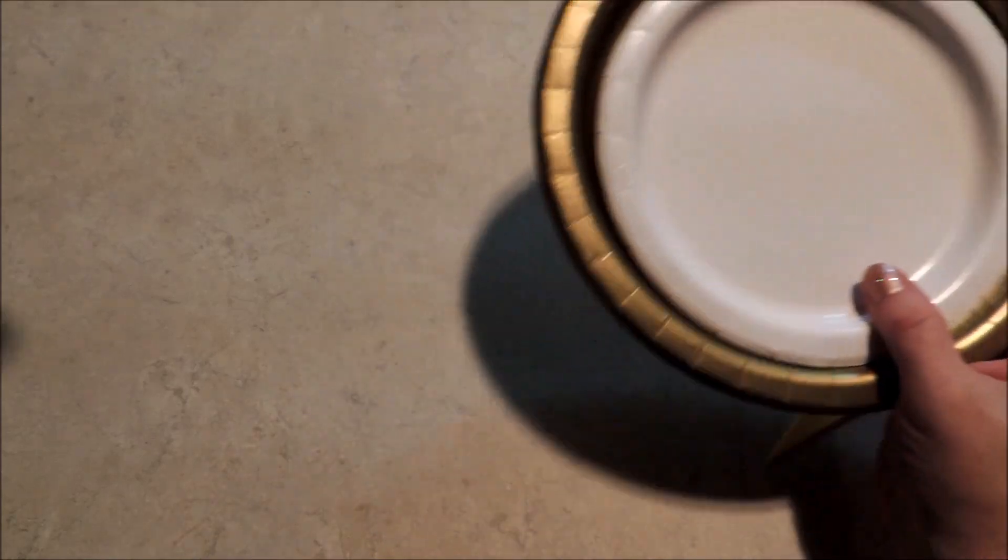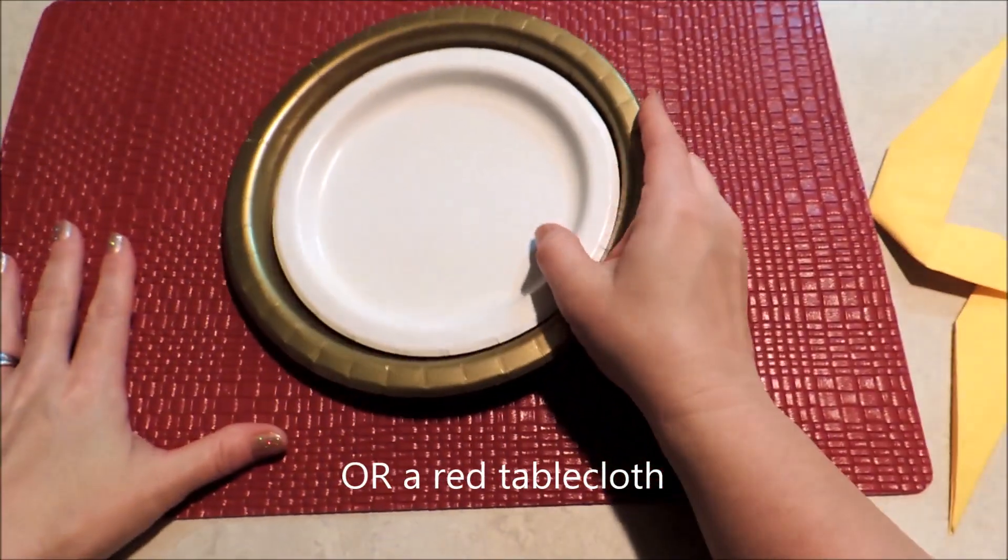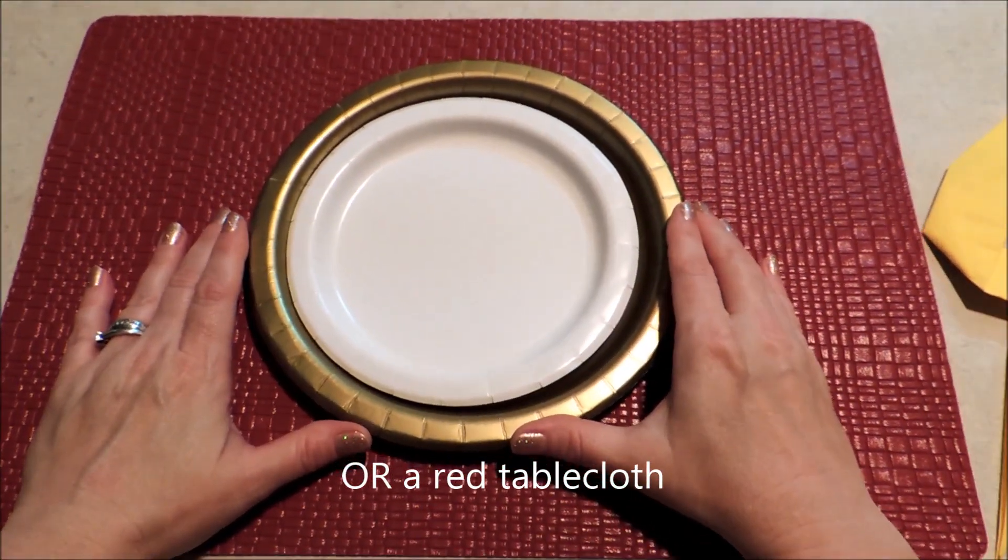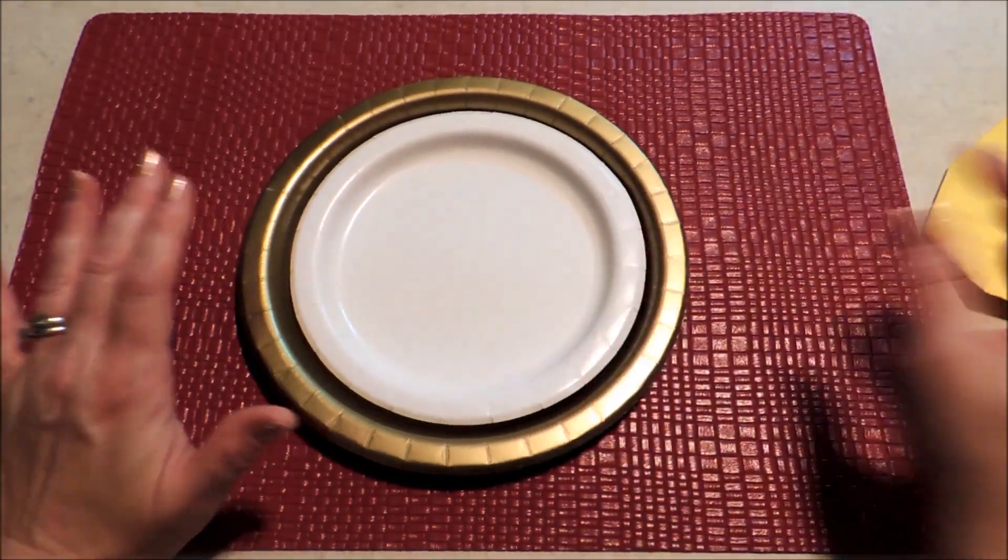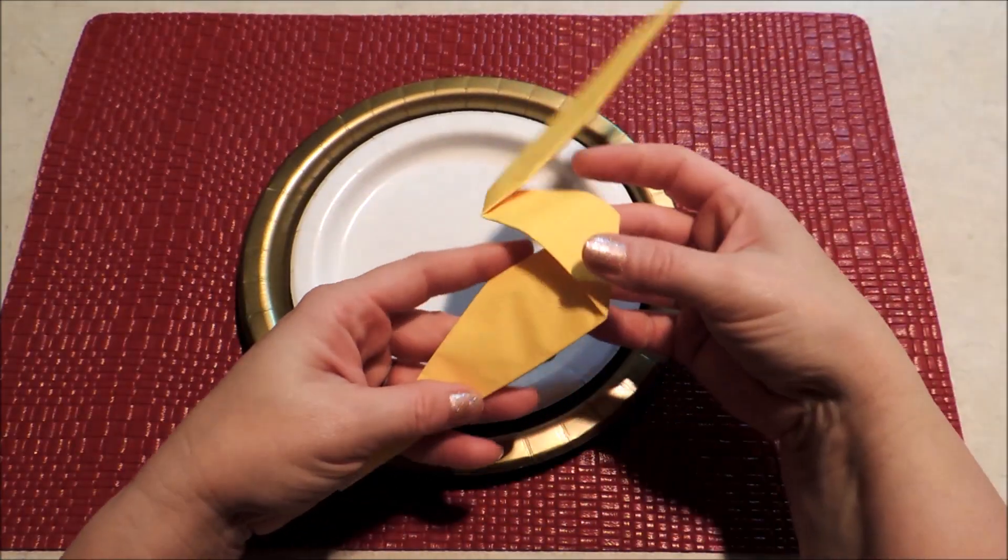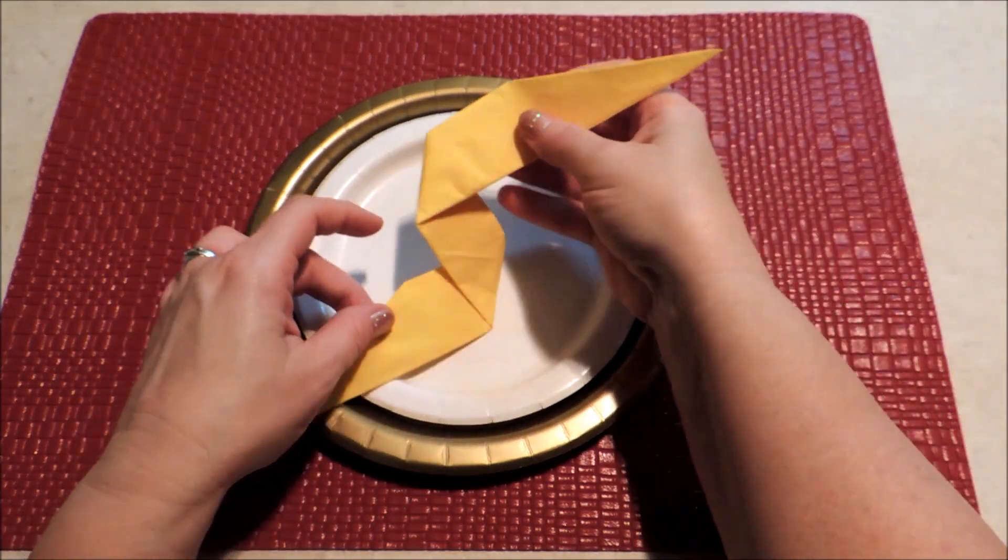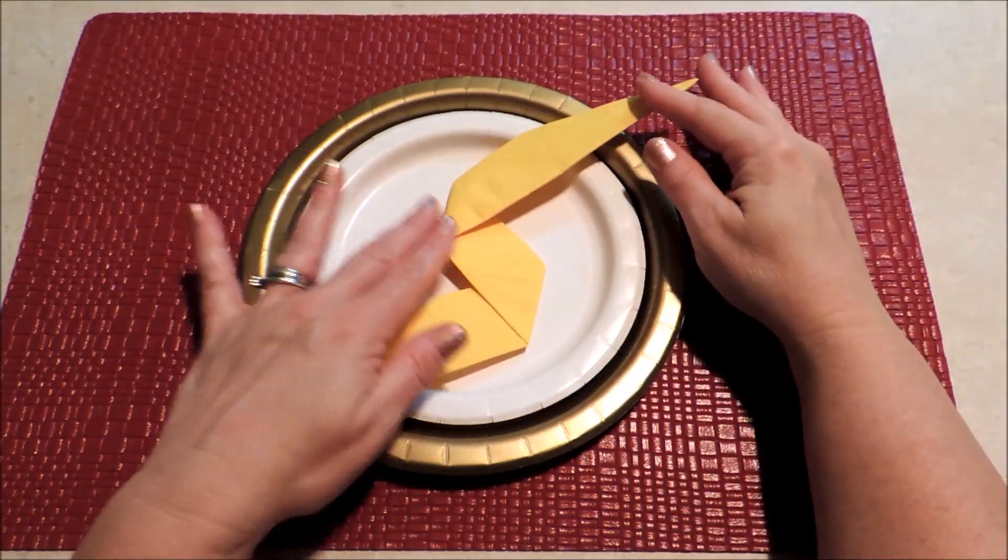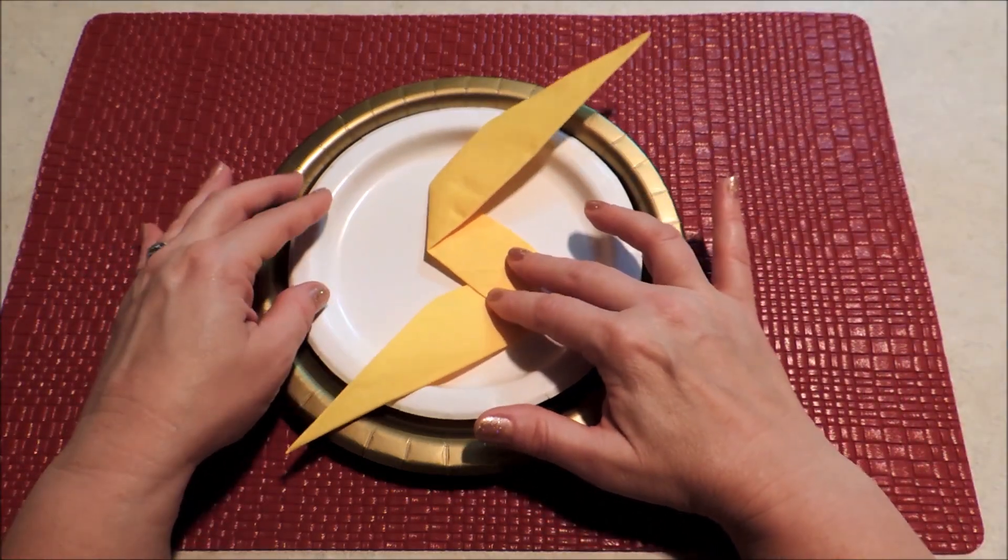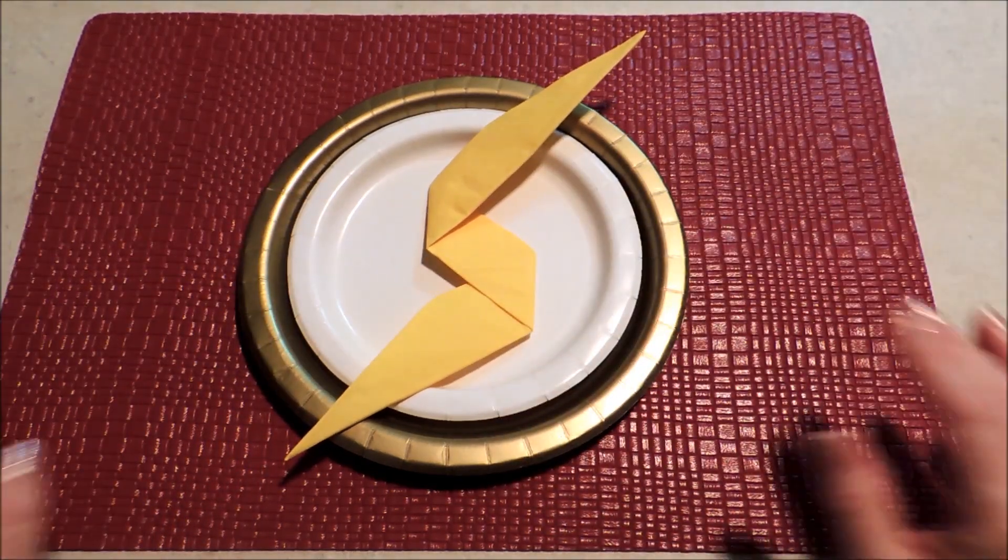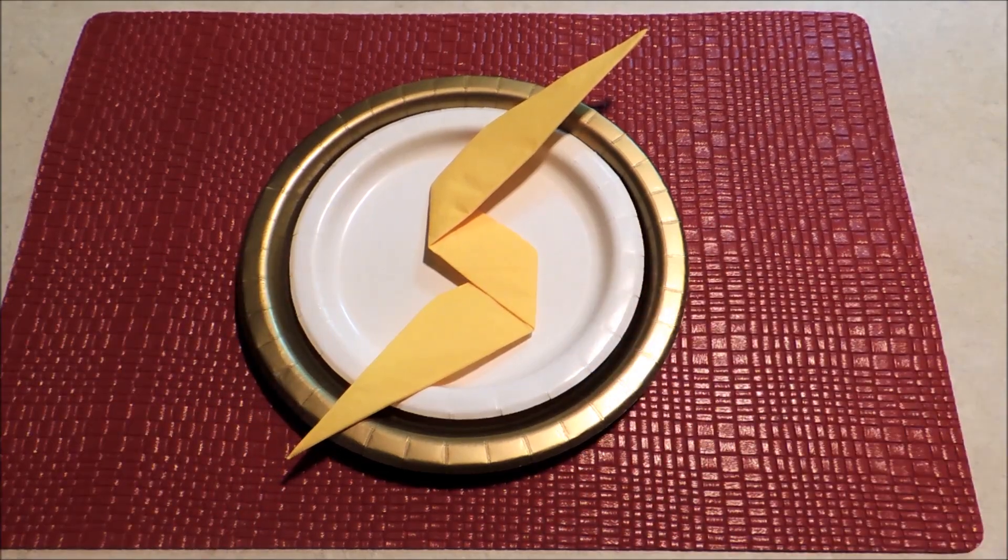And I'm going to bring in a red placemat. Just center that up. And then lay your lightning bolt on at an angle. And that is all there is to it. And you've got a Flash table setting. I think this is a lot of fun.